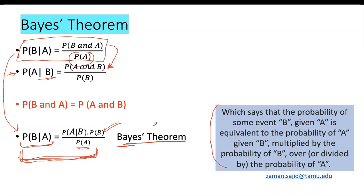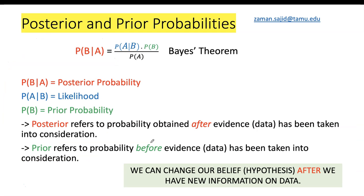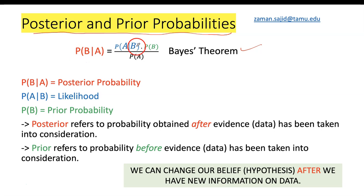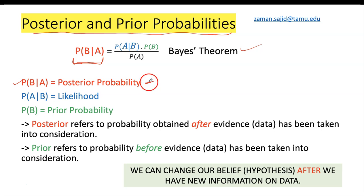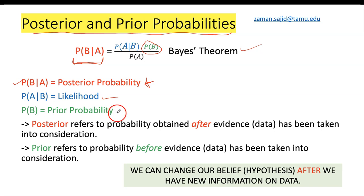Now I will come back to my original question: how do you differentiate between posterior and prior probabilities? In this Bayes' theorem, the term on the left — probability of B given A — is what we call the posterior probability. The term in blue above the division — probability of A given B — is called the likelihood. And the probability of B is what we call the prior probability.